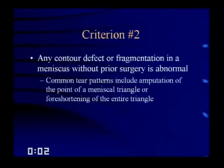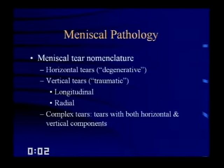Any contour defect or fragmentation in a meniscus without prior surgery is also abnormal. Common tear patterns include amputation at the point of the triangle or foreshortening of the entire triangle. It's important to know how to describe meniscal tears. They can be divided into horizontal tears, which tend to be degenerative; vertical tears, which are traumatic and subdivided into longitudinal and radial; and complex tears, which have both horizontal and vertical components.